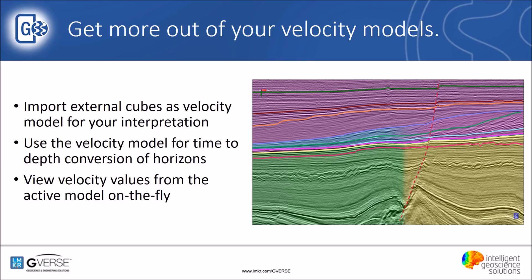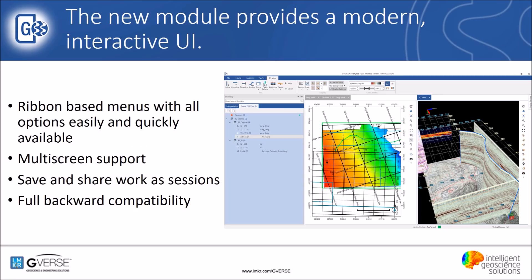We've made big improvements to our velocity modeling workflows as well. Now you can use your models for depth conversion of horizons, and you can look at velocity values extracted from the model displayed directly on your seismic sections. We've also added support to import velocity cubes created externally and use them as your active velocity model for your interpretation and your entire GeoGraphics project.